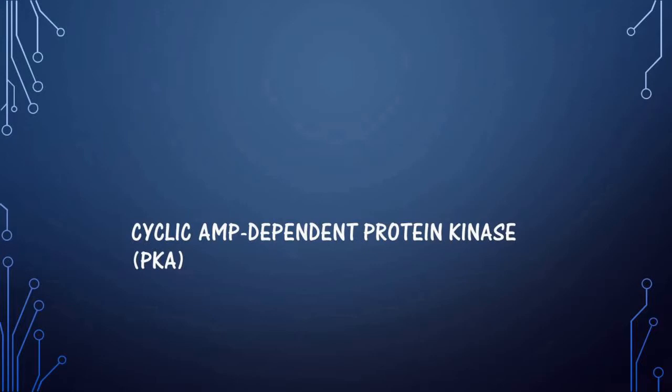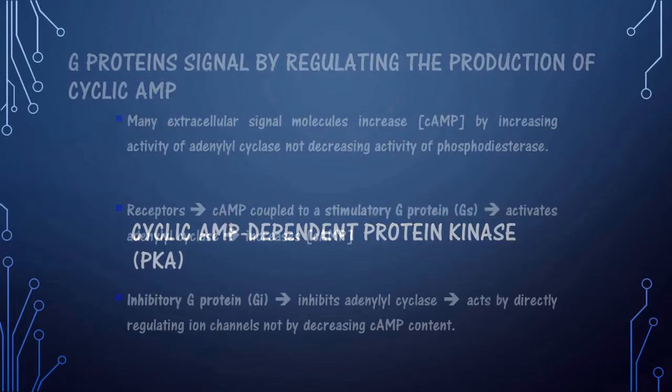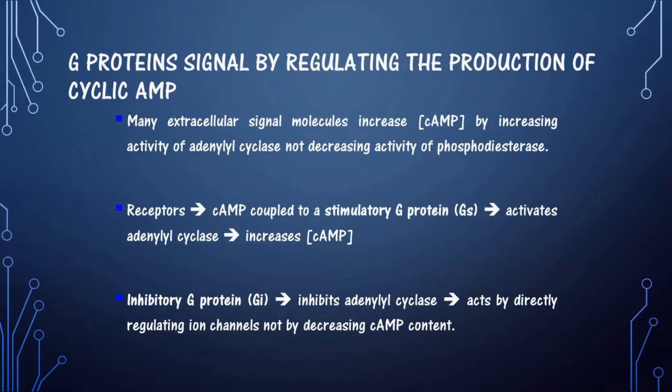Next is the cyclic AMP-dependent protein kinase. G proteins signal by regulating the production of cyclic AMP. The major secondary messenger is cyclic AMP, which is produced by adenylyl cyclase, and that cyclase is activated with the help of the G protein.